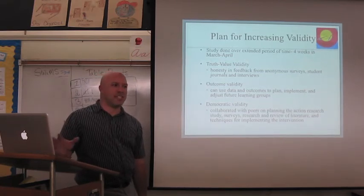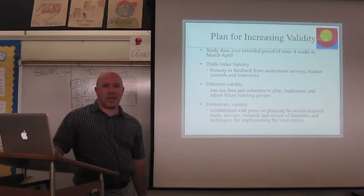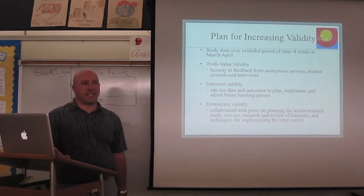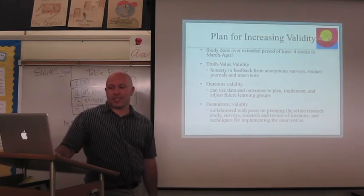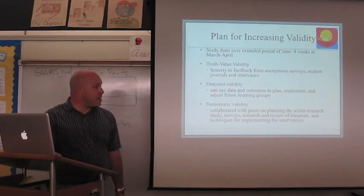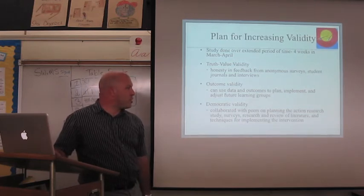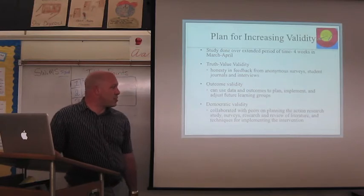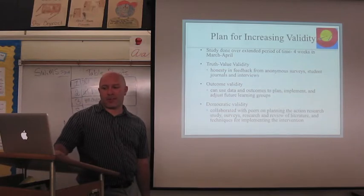Outcome validity, I can use the data that I collected from the surveys and interviews, and then adjust how I conducted the intervention. So if I needed to add or change some of the roles, I could do that. Or if I needed to move different kids and switch them with others in different groups, then that was something that I could do to adjust the future learning. And then the final type of validity is democratic validity, where you can collaborate with your colleagues on planning future action research, reviewing different literature, how to conduct surveys or implement techniques for further interventions.